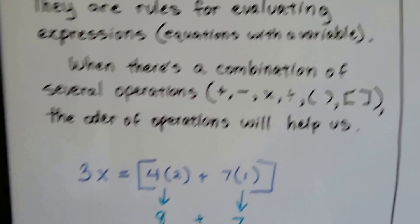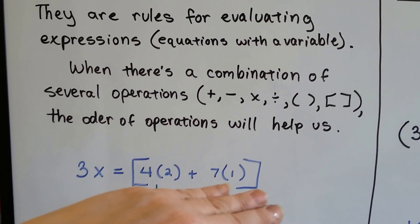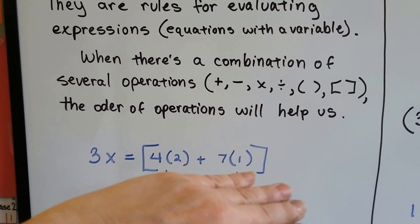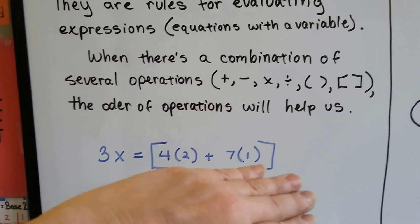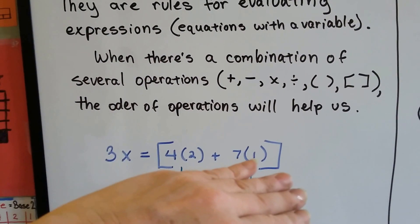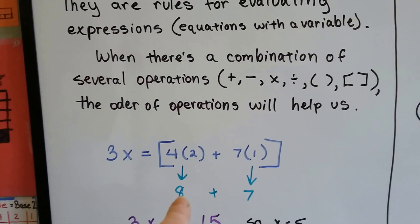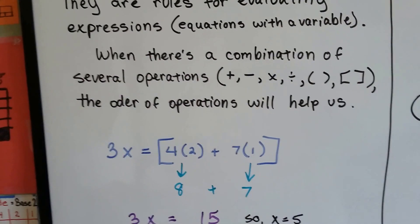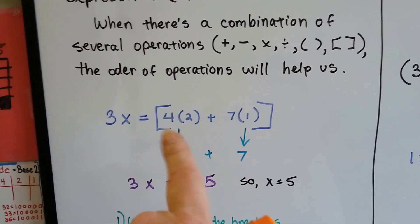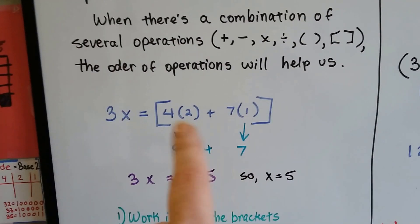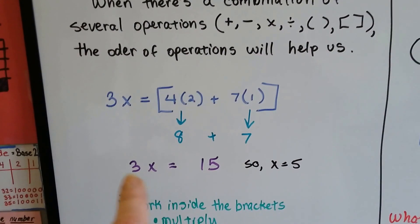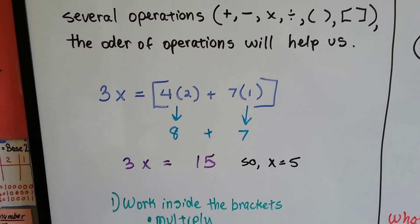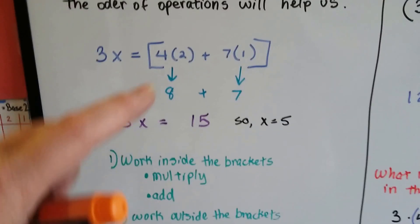When we see an expression like this one, it looks really confusing — a lot going on. We know we have to do parentheses first and work inside the brackets. We're going to do 4 times 2, which is 8, and 7 times 1, which is 7, because that's multiplication and we do that before we add. Because the addition is inside the brackets, we do that next: 8 plus 7 is 15. Now the problem comes down to 3x equals 15, so x is 5. Work inside the brackets — multiply, then add.